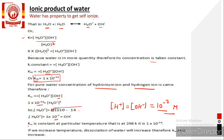The ionic product of water is constant at a particular temperature of 298 K. If we increase the temperature, dissociation of water increases and therefore the ionic product also increases. The ionic product increases with increase of temperature and remains constant at 298 K, where Kw = 1 × 10⁻¹⁴.